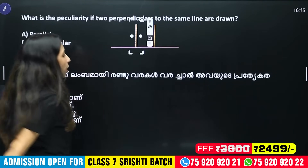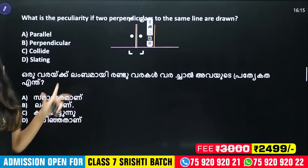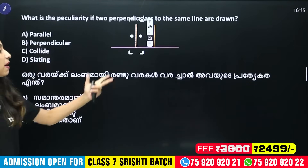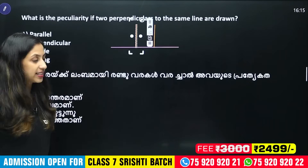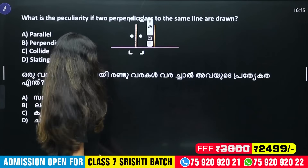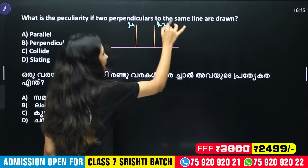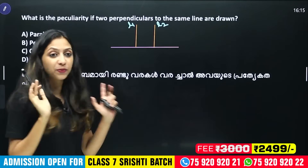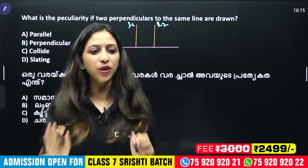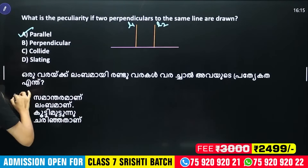We have two lines, L1 and L2. These two lines are perpendicular to the same line, so these lines are parallel to each other.